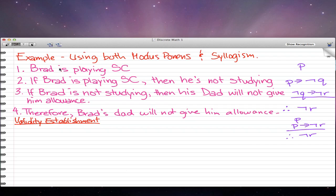We got Brad is playing StarCraft. If Brad is playing StarCraft, then he's not studying. If he's not studying, then his dad will not give him allowance. Therefore, using both syllogism and modus ponens at the end here, we found that Brad's dad will not give him allowance, or not R.